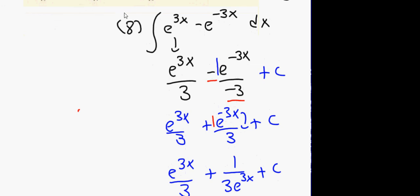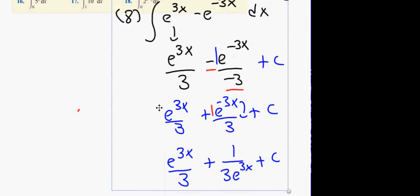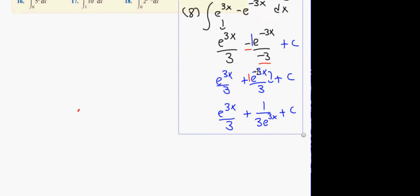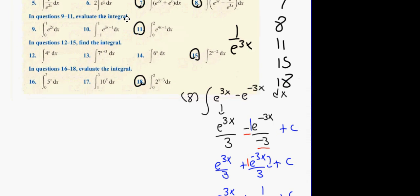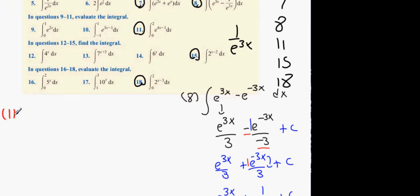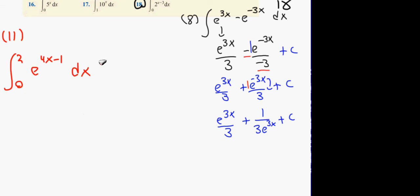We're now going to do number 11. In number 11, we have the integral from 0 to 2 of e to the 4x minus 1 dx. Now, what we're going to do here, once again, the power never changes. What's the derivative of the power? 4. From 2 to 0. Let's put in some numbers here.